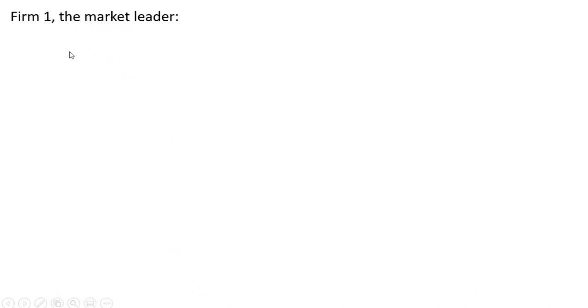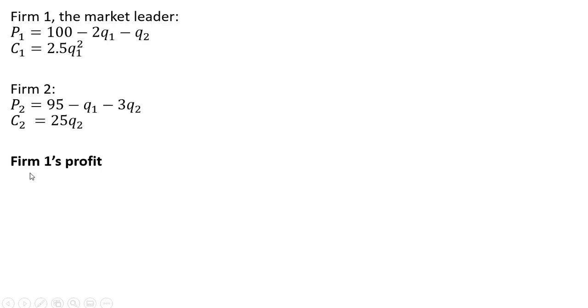Firm one is the market leader setting its output first. Here is the inverse demand for firm one. And here is firm one's total cost of production. And firm two's information is as follows. Let's set up firm one's profit function, total revenue minus total cost.